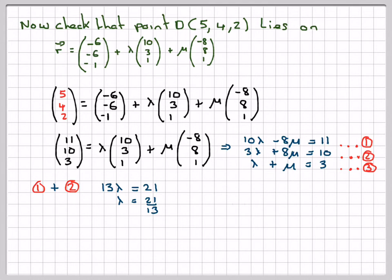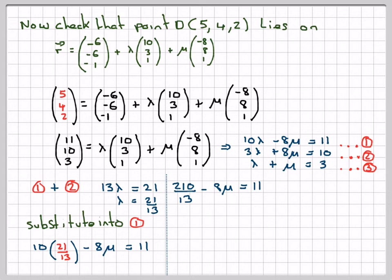Substitute 21/13 back into equation 1. We're going to have 10 times 21/13 minus 8μ is equal to 11. So it's going to give me 210/13 minus 8μ is equal to 11. Taking the 11 over here, 210/13 take away 11 is 67/13, is equal to 8μ. Dividing by 8, we're going to have that μ is 67/104.